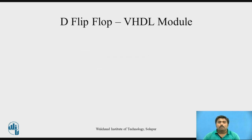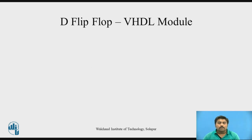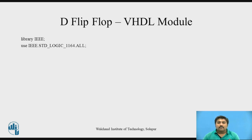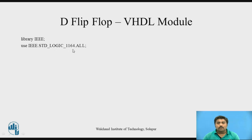Let us go for the VHDL module. While writing the VHDL module, keep in mind there are three main parts: the first part is the library declaration, the second part is the entity part, and the third part is the architecture part. In the library declaration, you mention which library you are using and what packages from that library. Here I have mentioned that I am using the IEEE library and from that library, the package std_logic_1164.